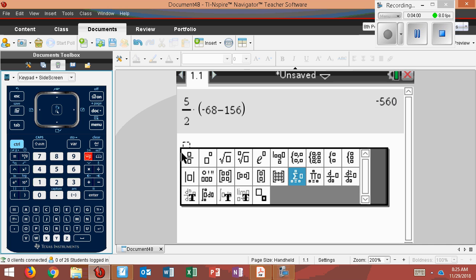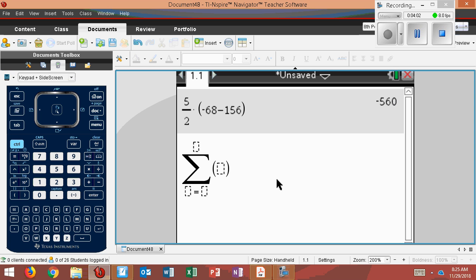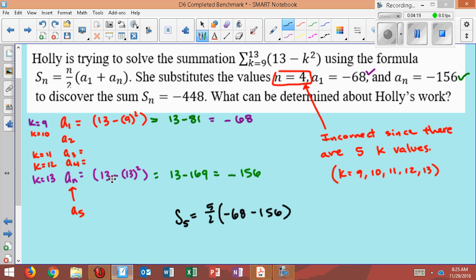Let's check it. So I'm going to clear this out real quickly. We said that S₅ is 5 over 2 times negative 68 minus 156. So we're saying that should be the sum. So if I do the sigma, which is the button next to 9, and type in what they originally gave me, I should get this value. 9 to 13, and the value is 13 minus k squared. Notice that, okay, somewhere I have made a slight mistake. Let's see if we can figure out what I messed up here in my math.